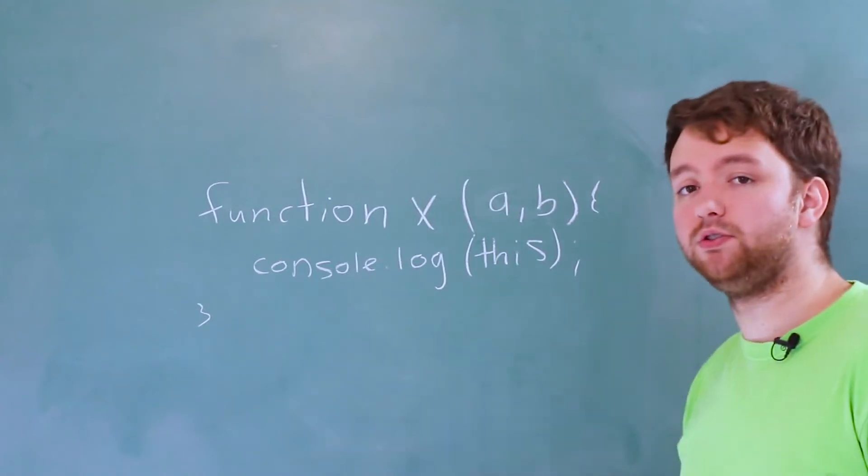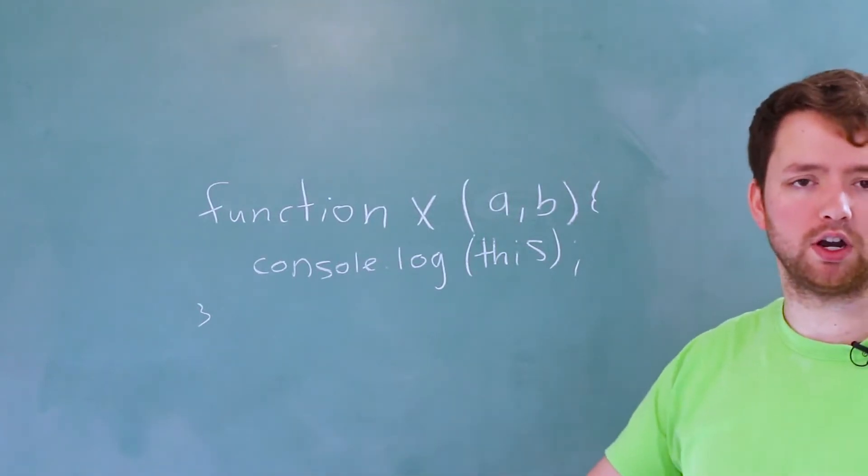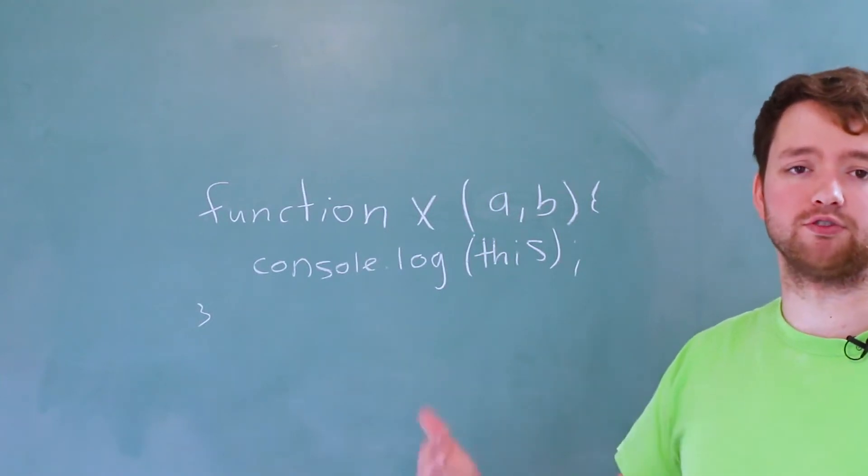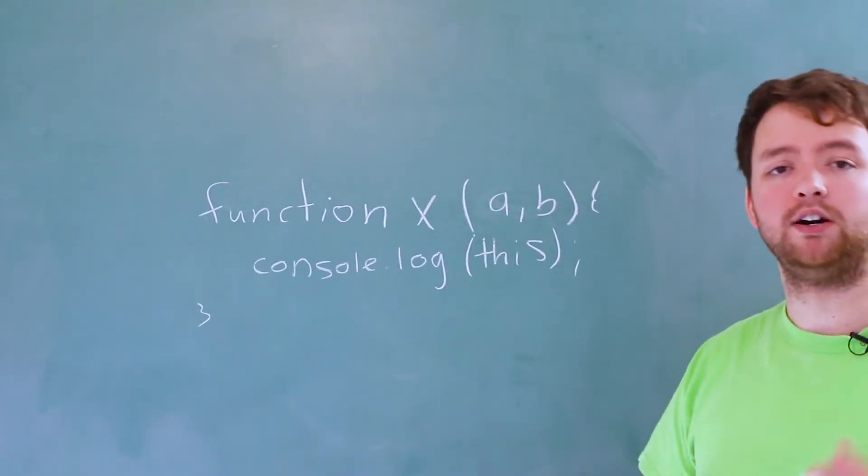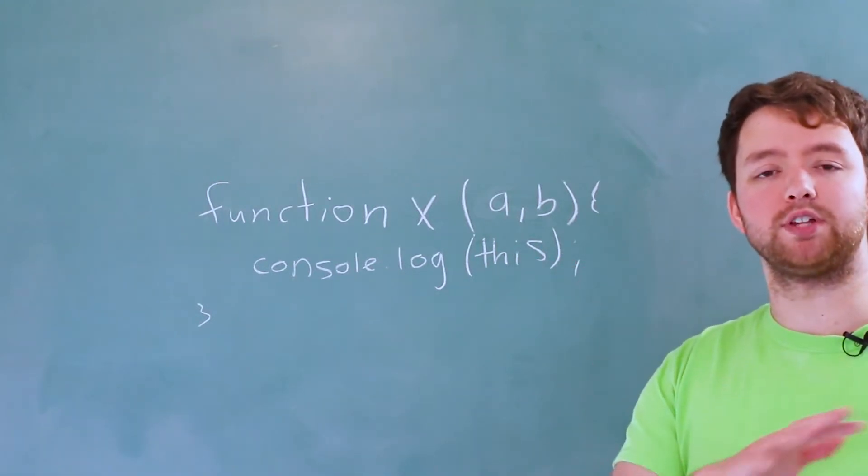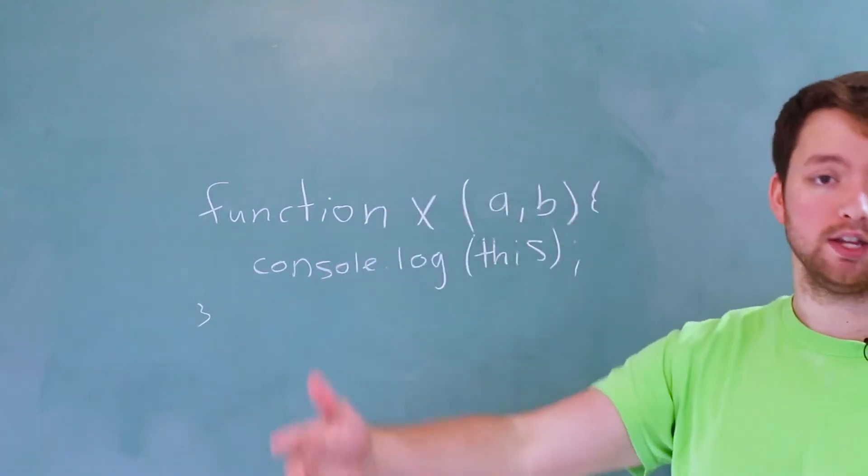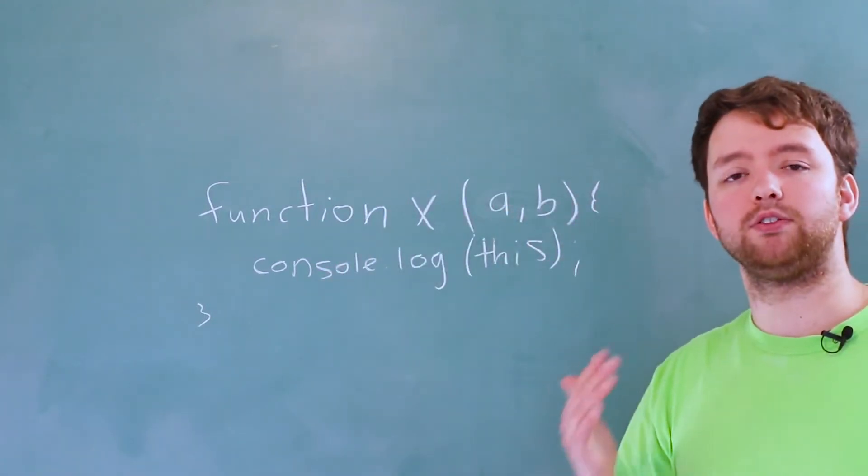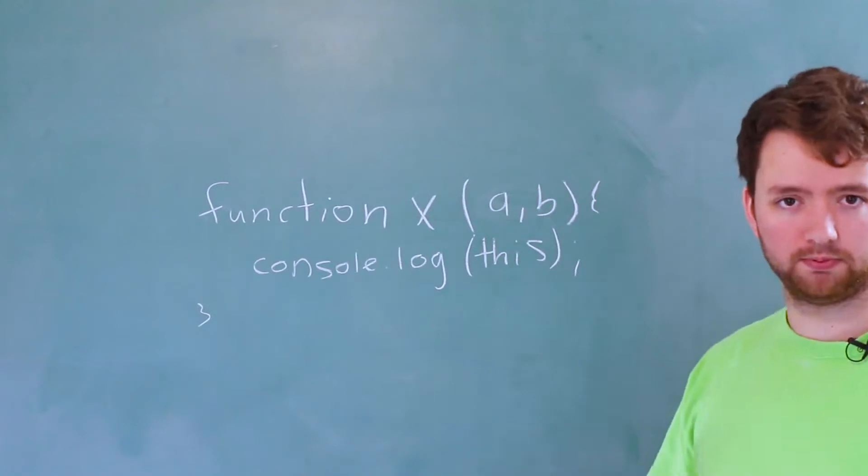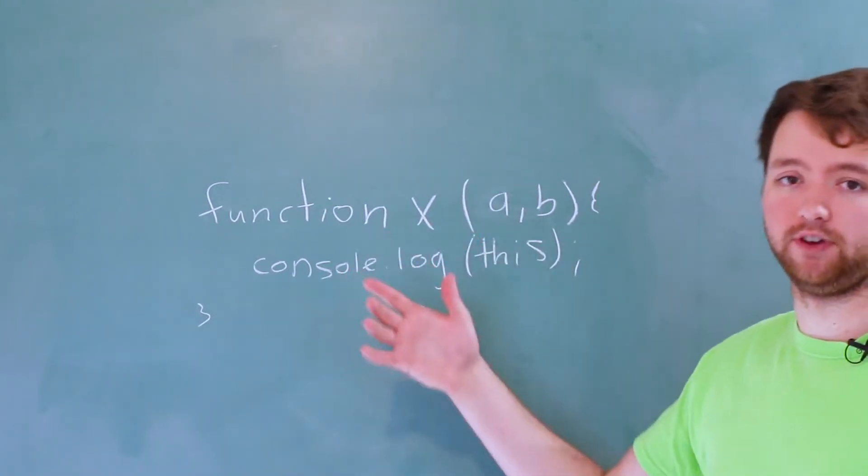For example, we can use this inside of methods to refer to the object that it's being called on. We can use it inside of constructors to refer to the new object, all kinds of things that we can do with this. It's not so much important that you understand all the uses of this by the end of this video. That's because we're going to go into that in the next video. The main thing is I want you to understand where this comes from. And as you understand now, it's an implicit argument that's passed to the function.